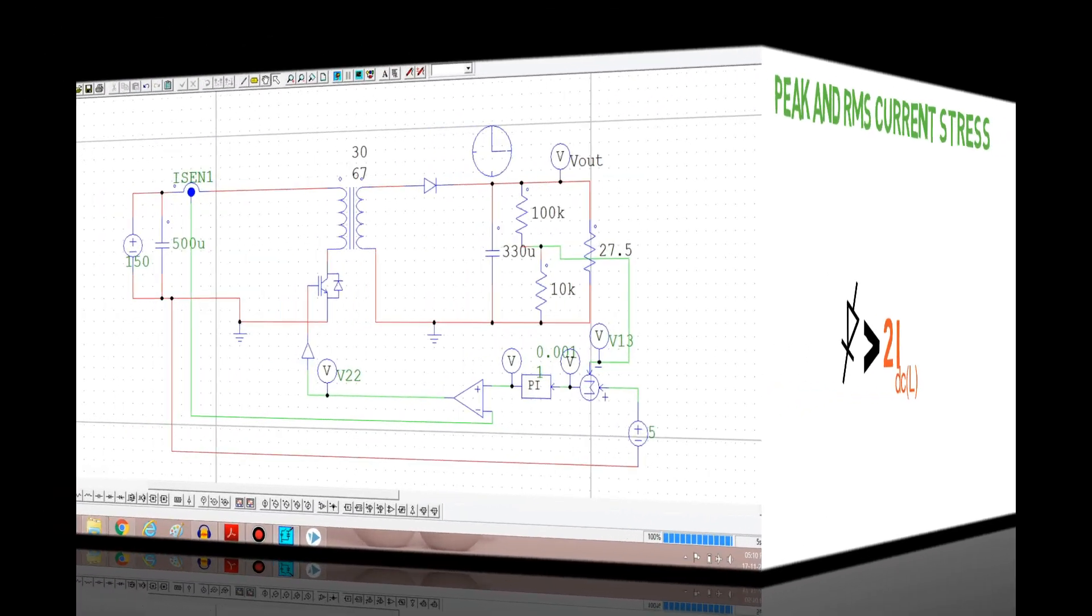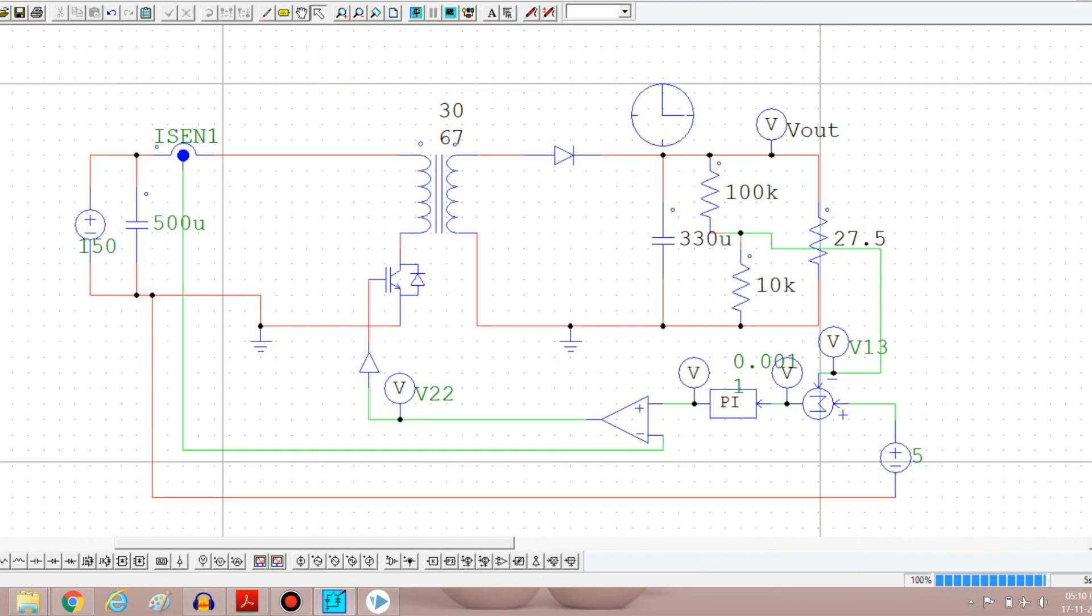Now I'll show you a simulation of the flyback converter on PSIM. Here all the components are connected according to topology. This is the feedback loop for stabilization of output. Now let's start the simulation.